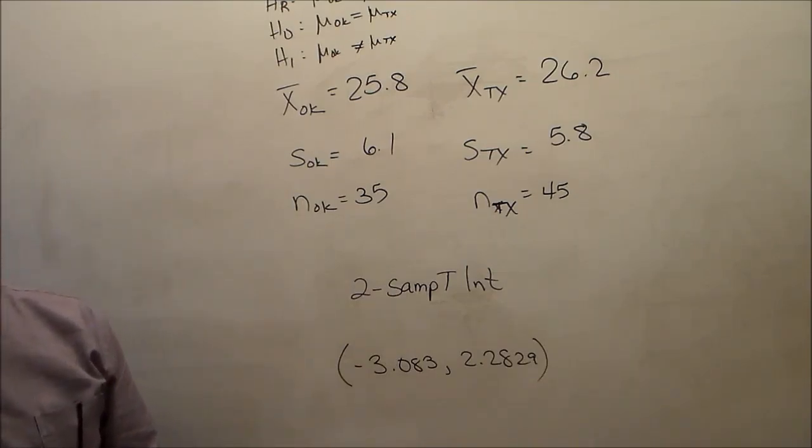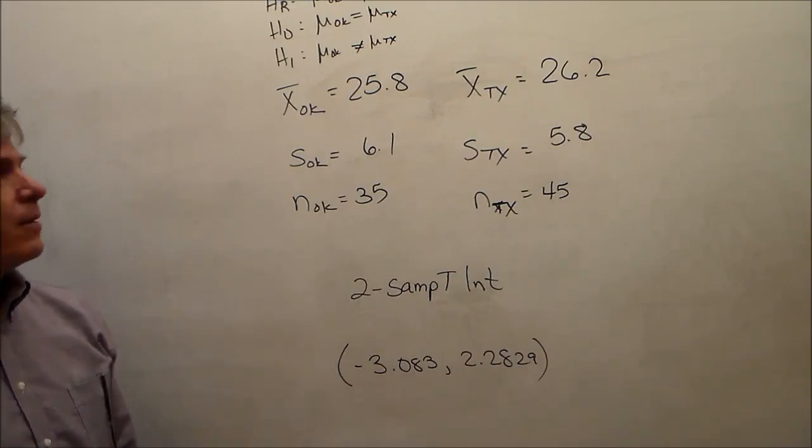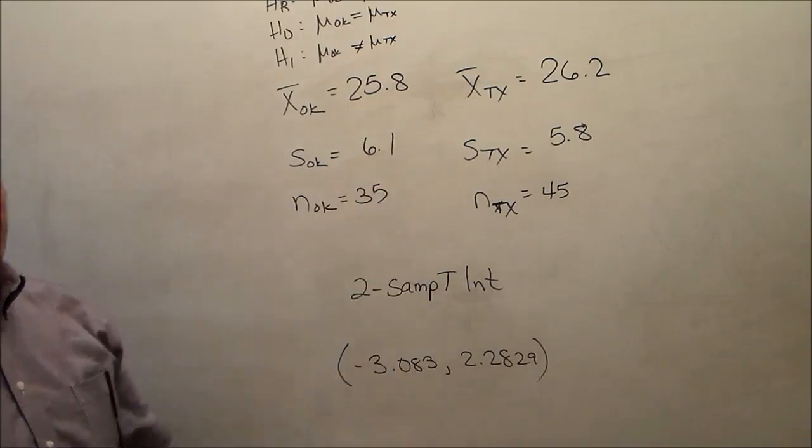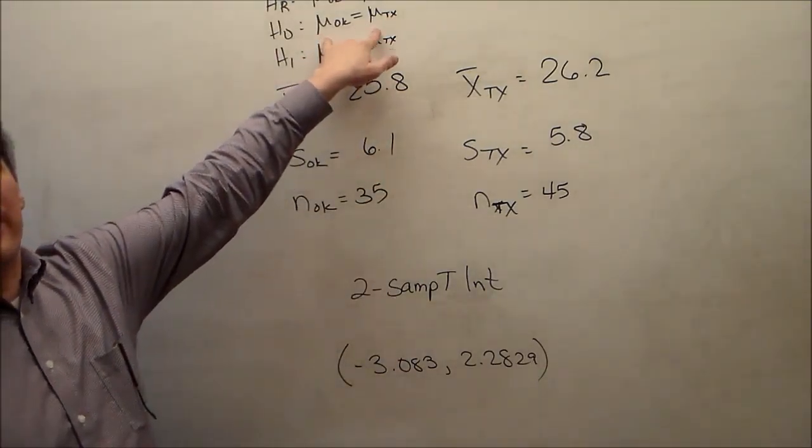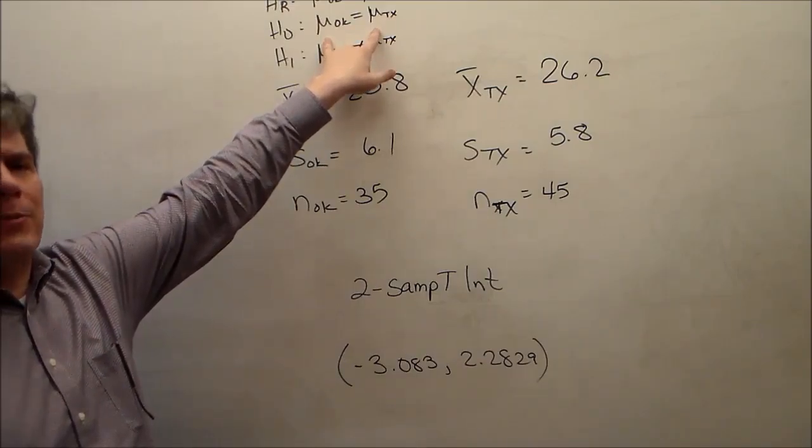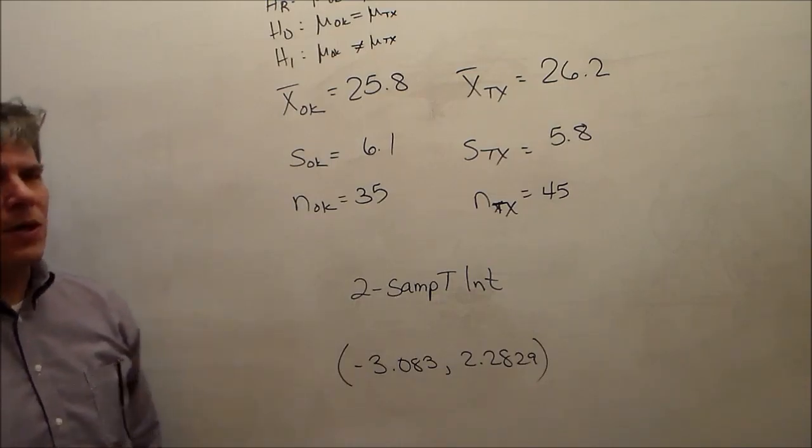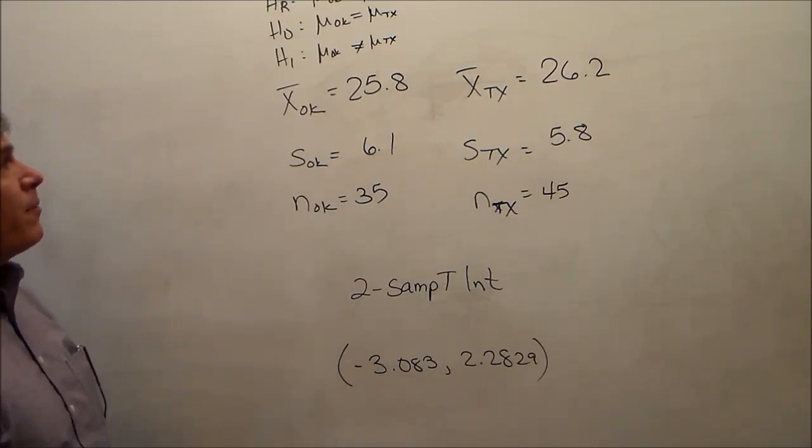Note that 0 is in there. Remember, a confidence interval is just a set of all reasonable values for the population parameter. The population parameter here that we're actually estimating is the difference in means. Zero is in there. So zero is a reasonable difference for these two means. In other words, it's reasonable to conclude that there is no difference. You might be wrong. This is statistics. We don't know right or wrong. This is all about weighing evidence.